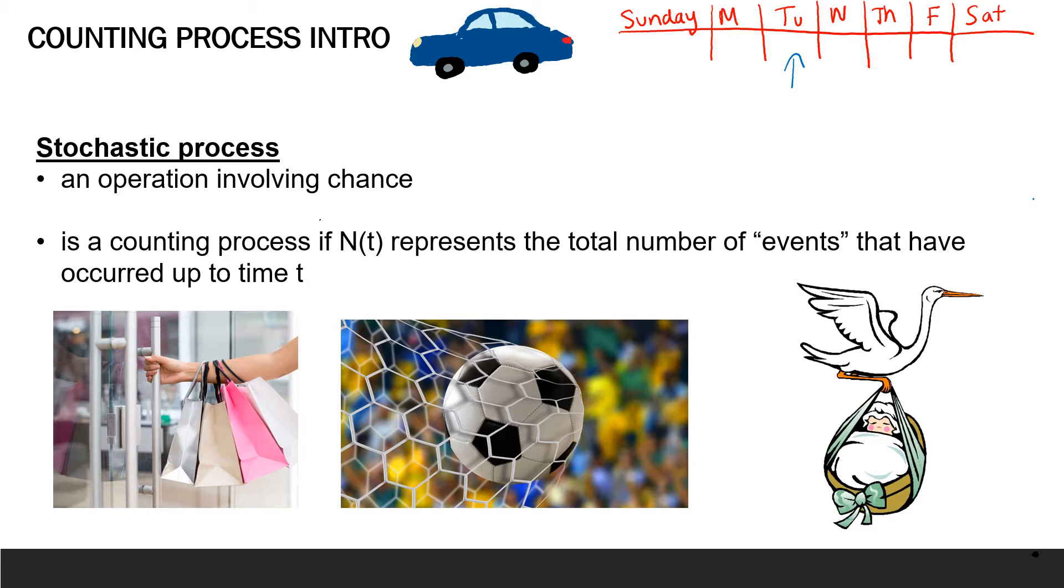So we say that a stochastic process, which we denote as N(t), where t is greater than or equal to zero, is a counting process if N(t) represents the total number of events that have occurred up to time t. So we've said two words, a stochastic process. But what is this stochastic process?